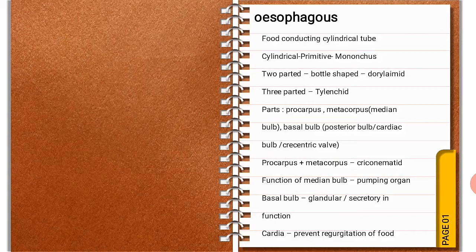What is esophagus? It is a food-conducting cylindrical tube. It is cylindrical in primitive form, present in Mononchus, which is a predatory nematode. It is divided into different parts depending upon the type of nematode: two parts in bottle shape in case of Dorylaimida, and three parts in case of Tylenchida. Its parts are procorpus, metacorpus, and postcorpus. Metacorpus is also known as the median bulb.